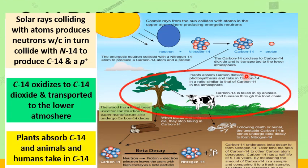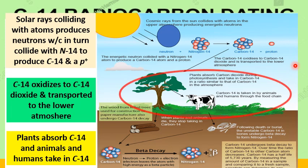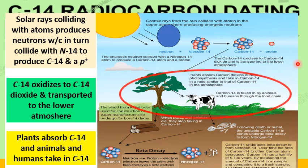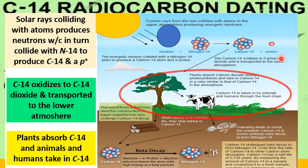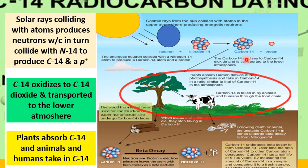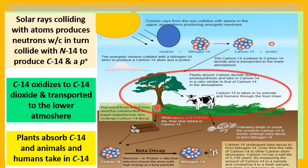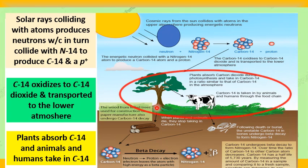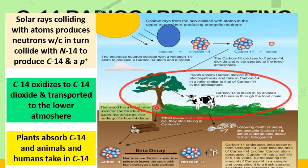Radiocarbon present in molecules of atmospheric carbon dioxide enters the biological carbon cycle. It is absorbed from the air by green plants and passed on to animals through the food chain.